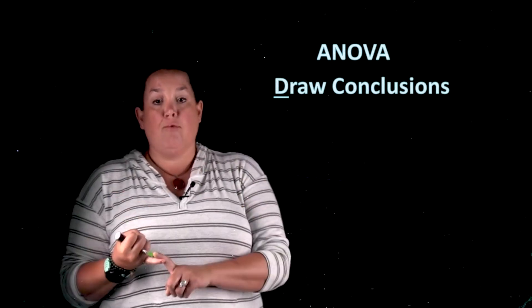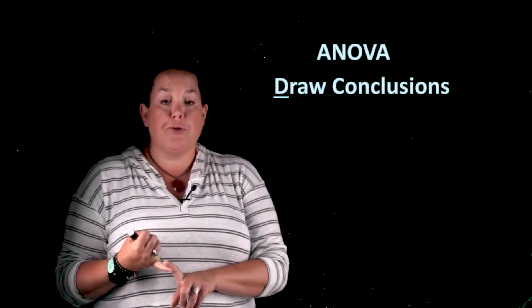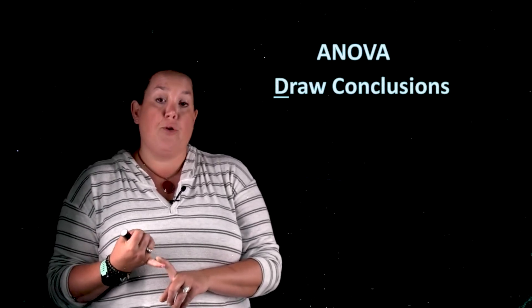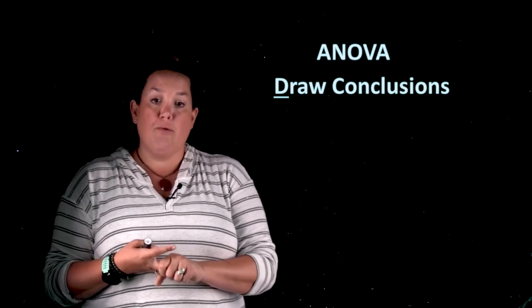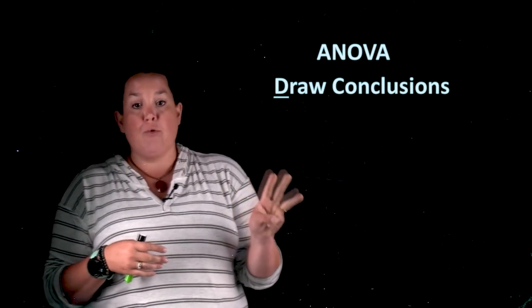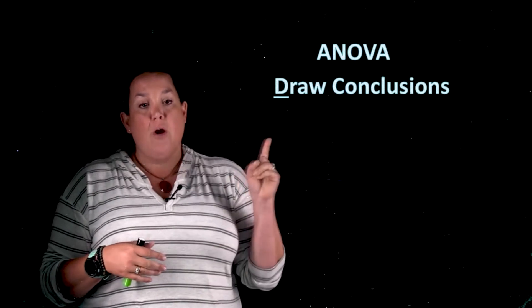In previous videos we talked about how to formulate the problem, which included writing out multiple definitions for mu's and different populations. Also the null and alternative. We talked about reviewing conditions, and we saw that there were three ways that we had to check conditions for an ANOVA.